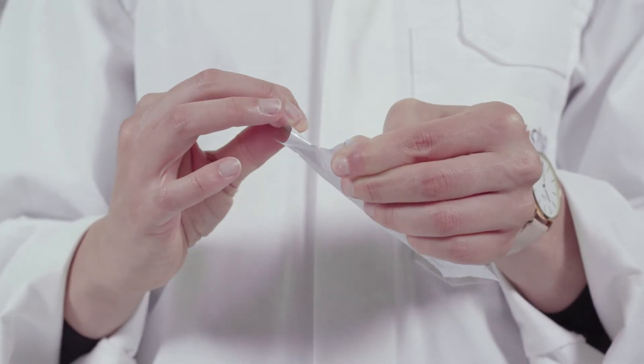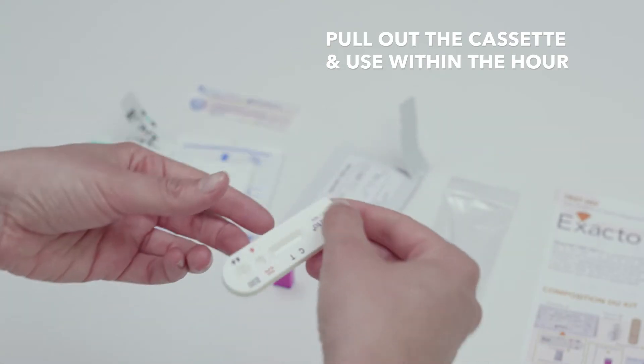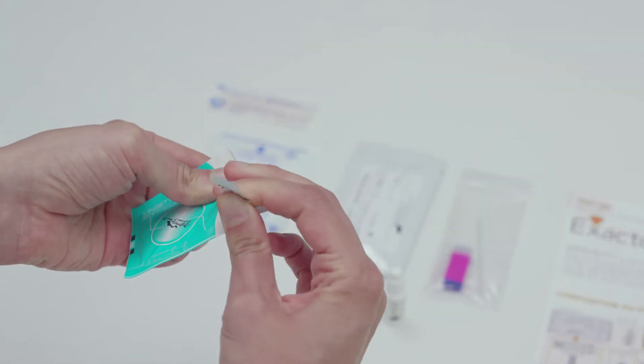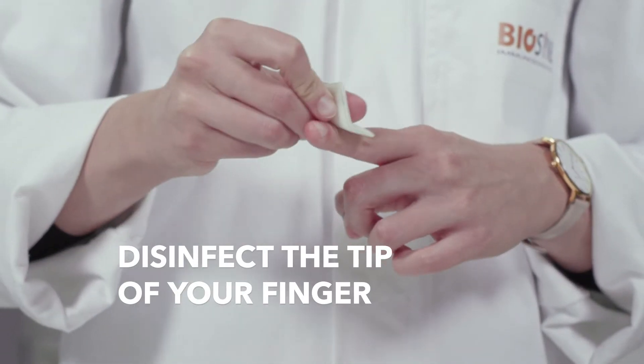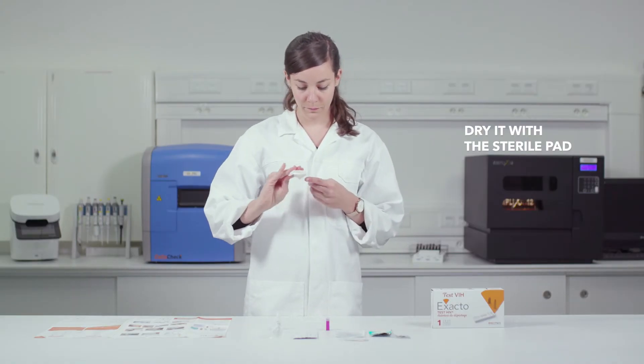Open the pouch and take out the test cassette. You will need to use it within one hour after opening it. Open the alcohol wipe and the sterile pad. Disinfect the tip of your finger with the alcohol wipe. Dry off any excess moisture with the sterile pad.